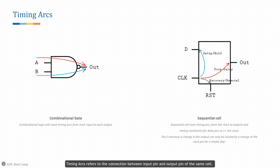Timing arcs refers to the connection between input pin and output pin of the same cell. We have two types of cells in the design: the combinational gates and sequential cells such as flops and latches.